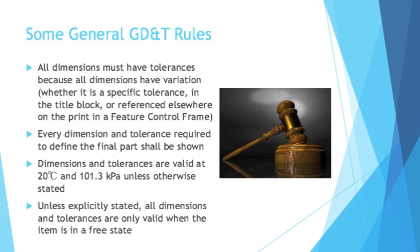So for things like jet engines, or submarine parts planned for the Arctic, they're going to have to state that these dimensions are based on a specific temperature variance. Also, tying off from dimensions and pressure — unless explicitly stated, all dimensions and tolerances are valid only when the item is in free state. So it's saying: here's a dimension of a part, but if you put it into a press, you're going to change that dimension.